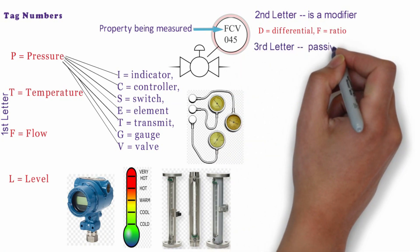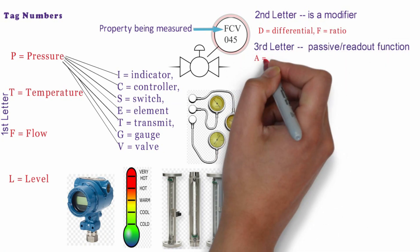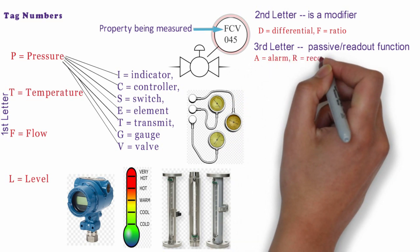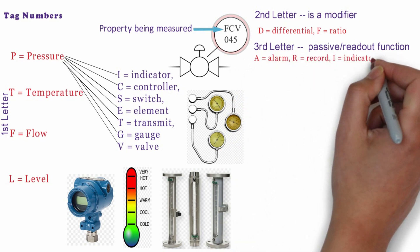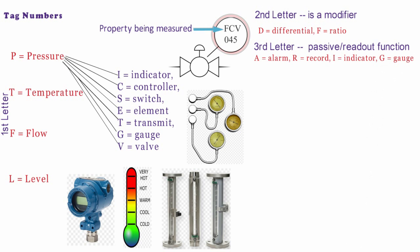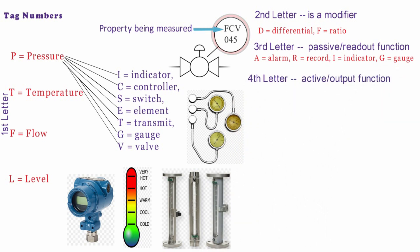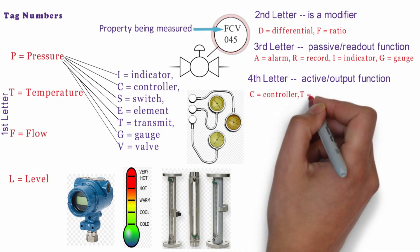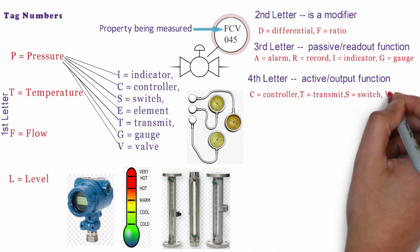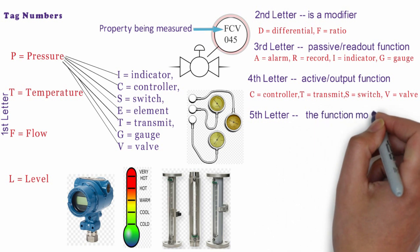Third letter indicates the passive or readout function like A is for alarm, R is for record, I is for indicator and G is for gauge. Fourth letter is for active or output function. Like C is for controller, T is for transmit, S is for switch, V is for valve.